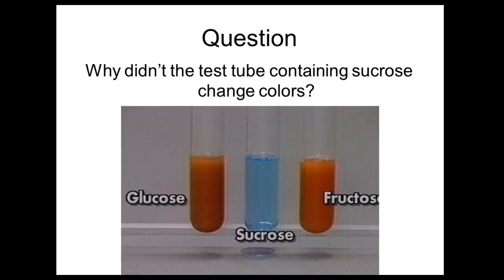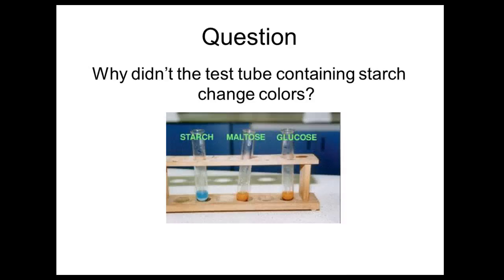Here are two exit ticket questions. First: why didn't the test tube containing sucrose — table sugar, a disaccharide — change colors when running a Benedict's solution test? Second: why didn't the test containing starch change colors if we have maltose and glucose and we're using Benedict's solution? Why wouldn't starch change colors?